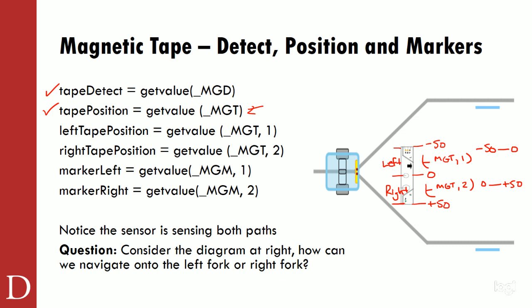MGT2 actually goes from zero all the way up to positive 50. There's a reason we're going to use these two this week instead of just using tape position. If I only want to follow a magnetic strip and don't need to make a choice to turn left or right, tape position gives me one value between negative 50 and positive 50. If it senses two halves — say negative 50 and positive 50 — it adds them together and gives me zero, meaning if there was a mag strip on each side I'd get zero. That's going to change this week.